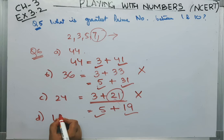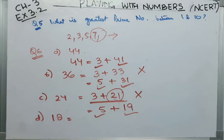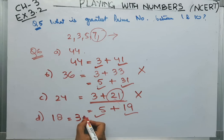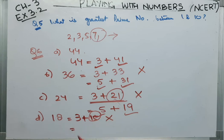Now, the D part is 18. How can we write 18? Now, I am taking 3, 3 plus 15. But 15 here is not a prime number. So, we have to take other examples.